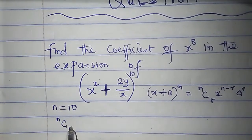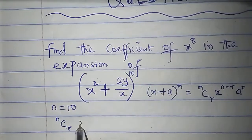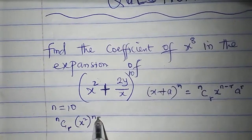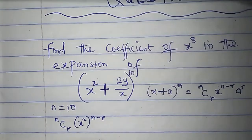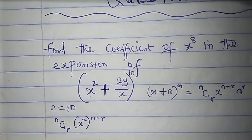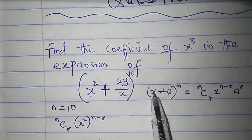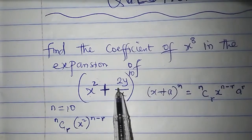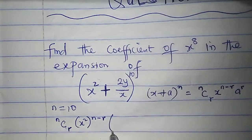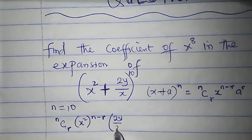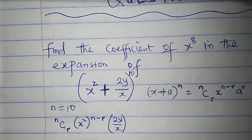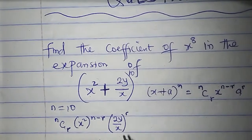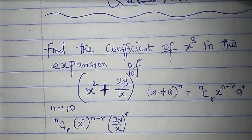So what would be the general term of this binomial expression? The general term will be n combination r times x squared to the power of (n minus r) — remember, x squared is a single term — times 2y all over x to the power of r. That's what we did: a to the power of r. So this will be the general term of this binomial.